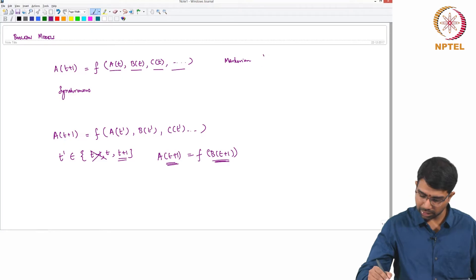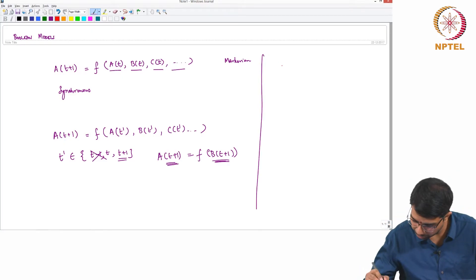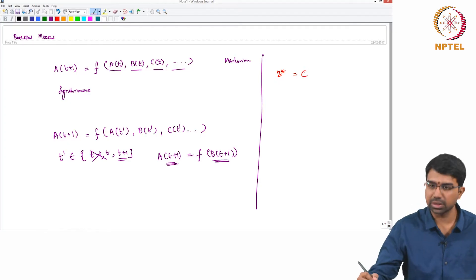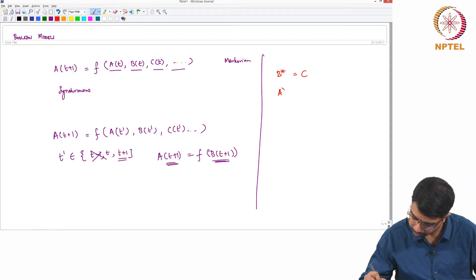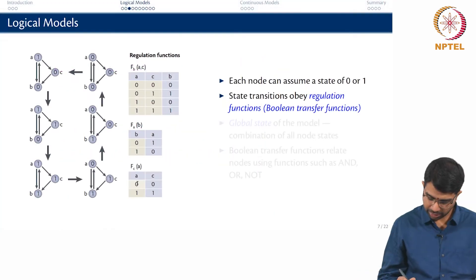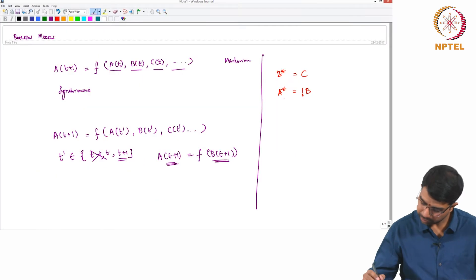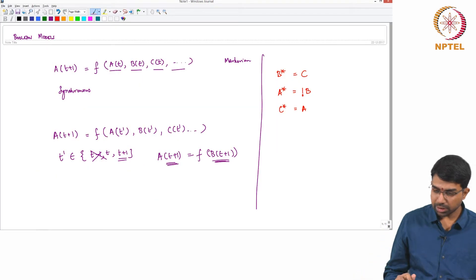So b is c. You can essentially write this as, we normally try to write down the rules in this fashion. We say to denote the update, we say a star. So b star equals c, and here a star equals not b and what about c star? c star is a.